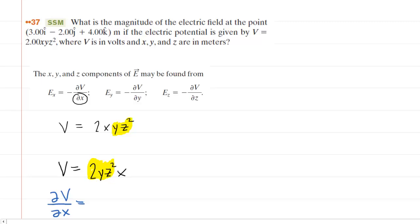For example, when you learned about derivatives and you calculated the derivative of, say, 10x, you knew that the derivative was just 10. So similarly, in this case, the derivative of this constant in front of x will just be that constant. So it will be 2yz squared.